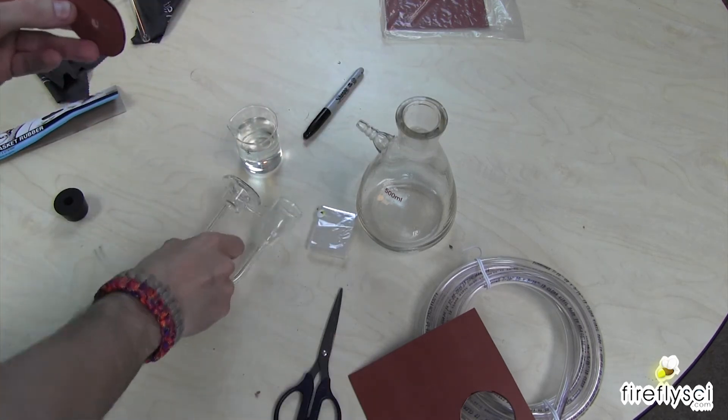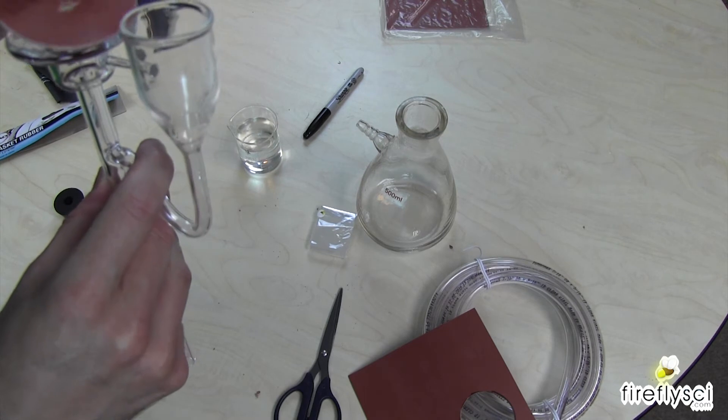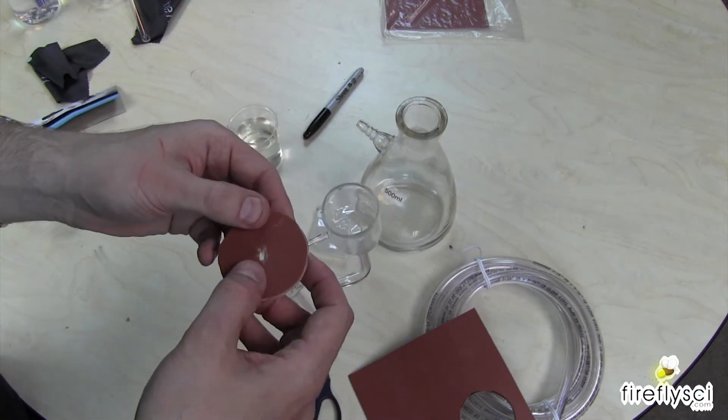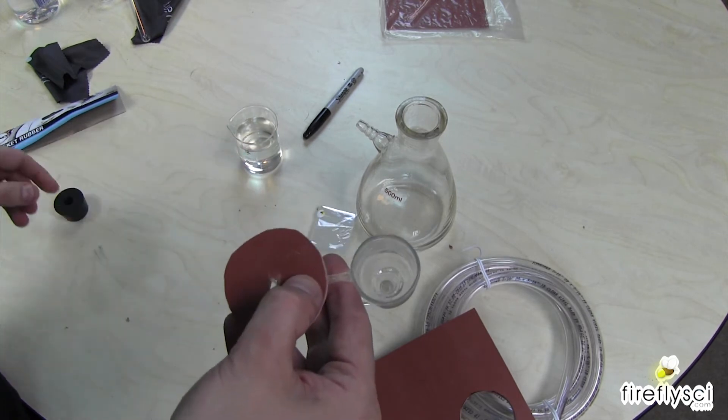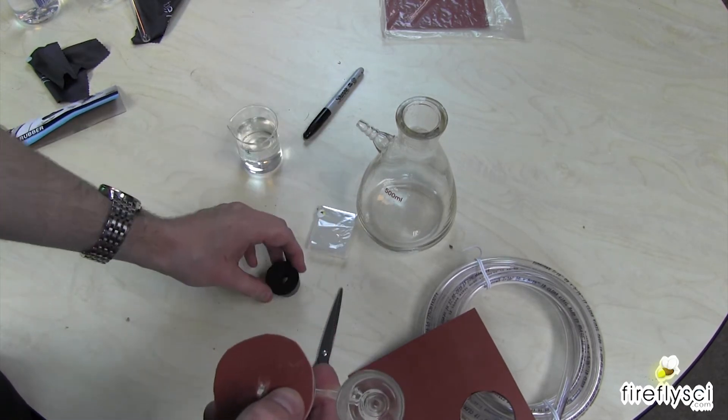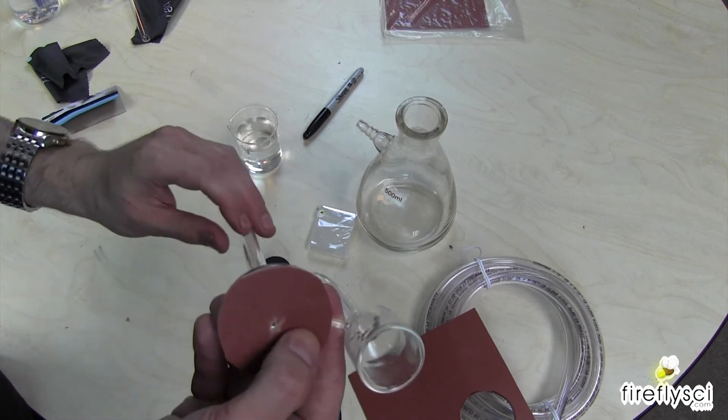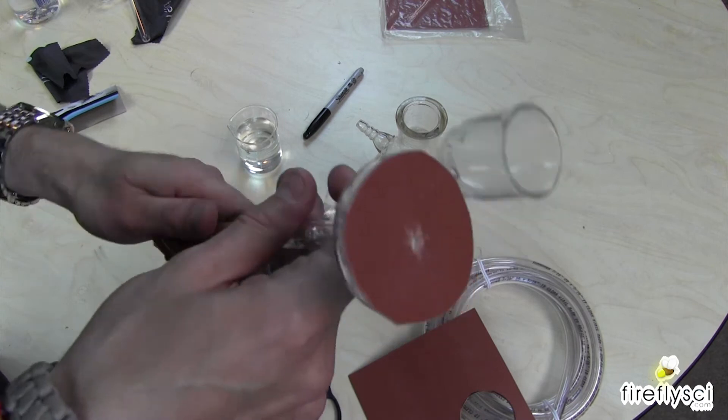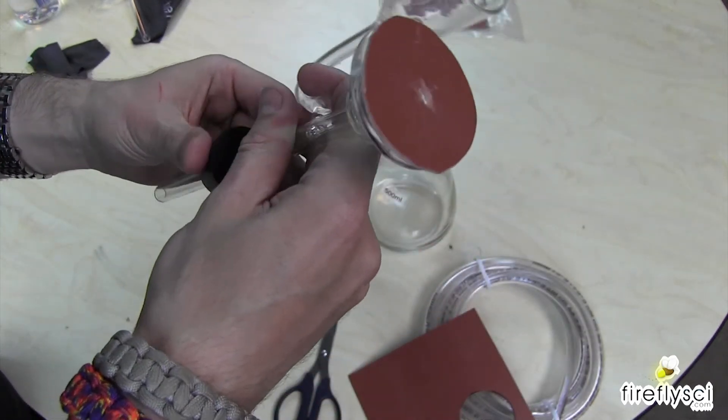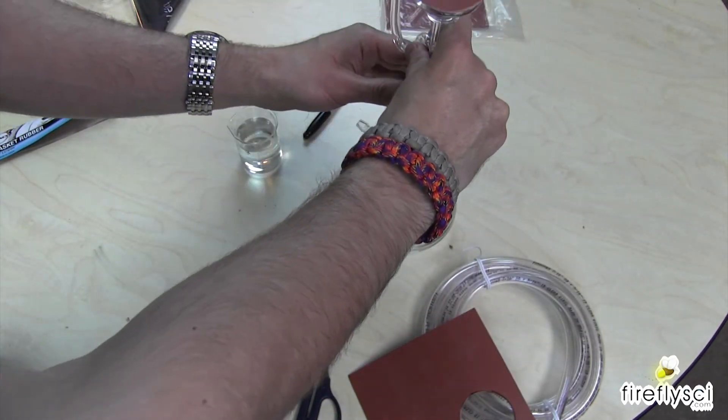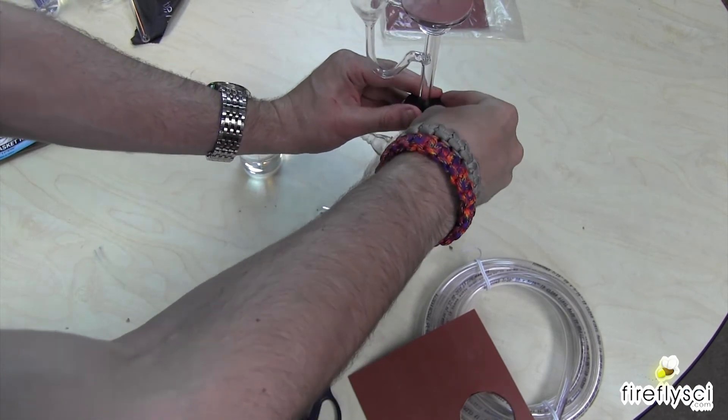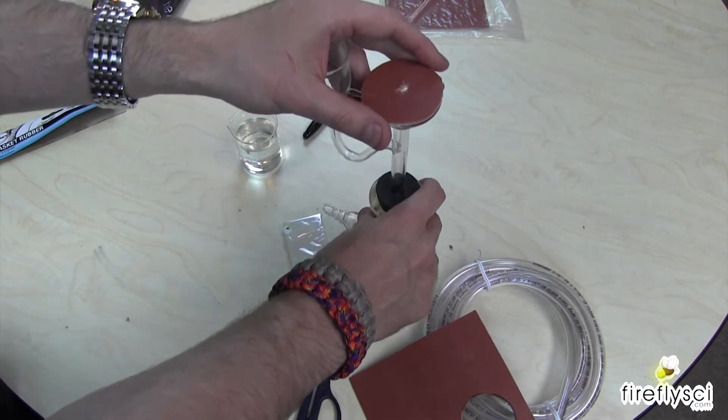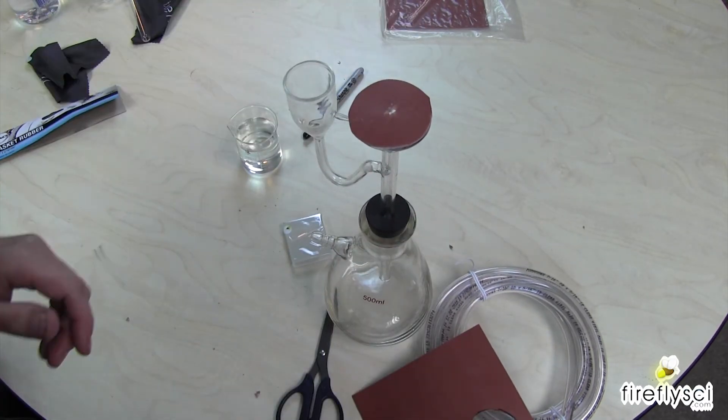Alright, let's see if that's good enough. So there's that. Let's put on the stopper here. Number seven stopper. Just put a little bit of water on the tube, bottom of the tube here. And it pops right on.